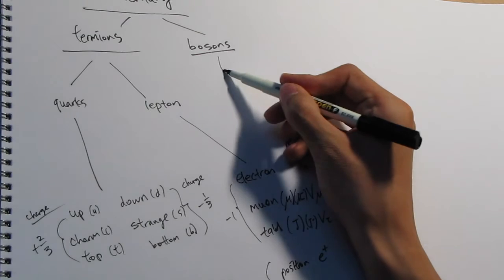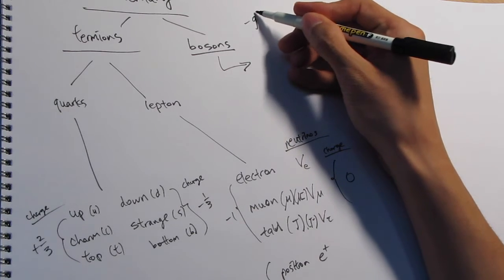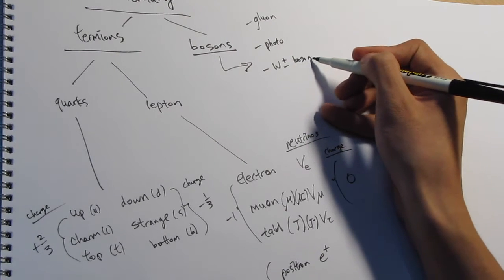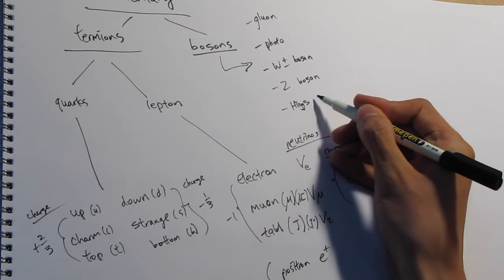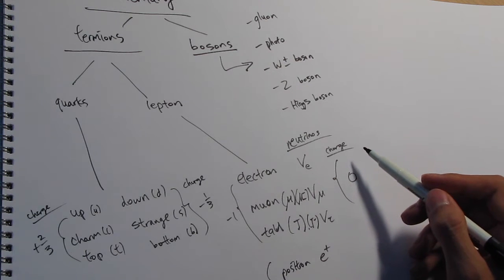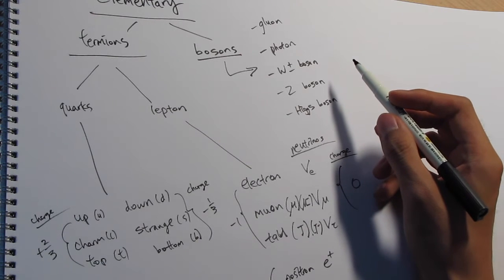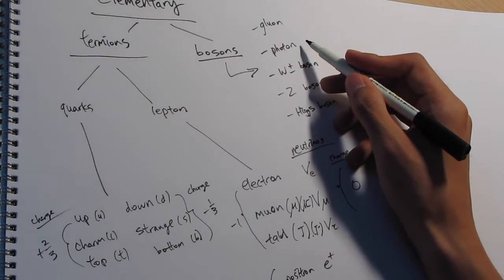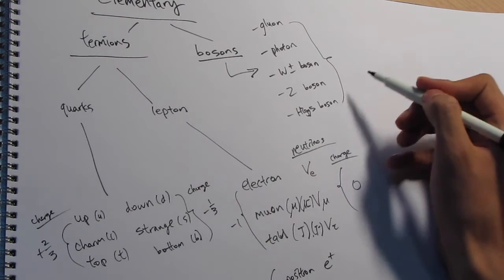Next we'll go into the bosons. There are four main types of bosons: the gluon, photon, the W-plus or W-minus boson, and the Z boson. I will also include the Higgs boson because it is recently discovered. These are the exchange particles, or the force carriers. For example, the photon has infinite range. I will get to these later as there is a separate section for these particles.